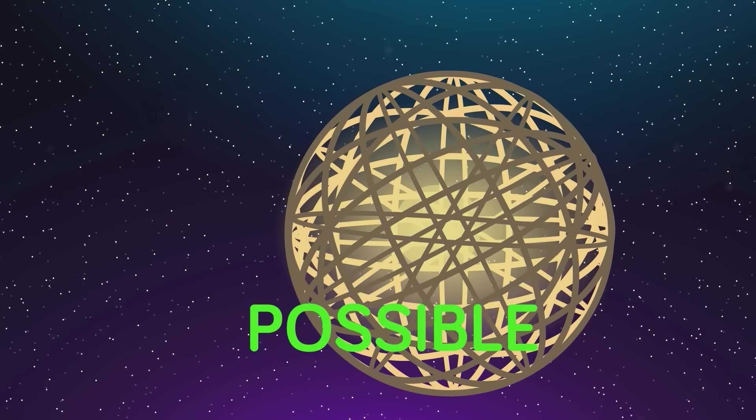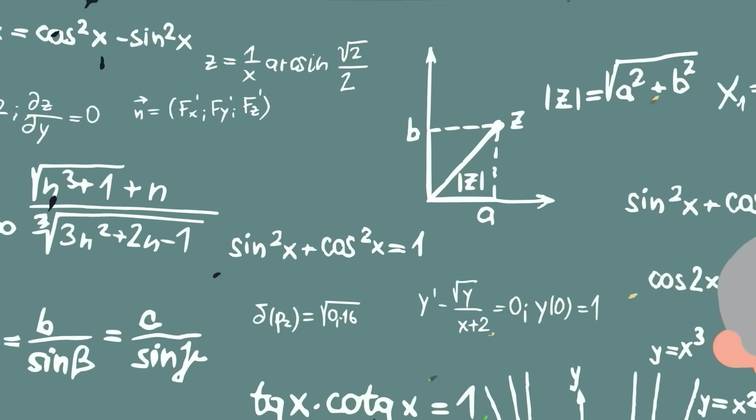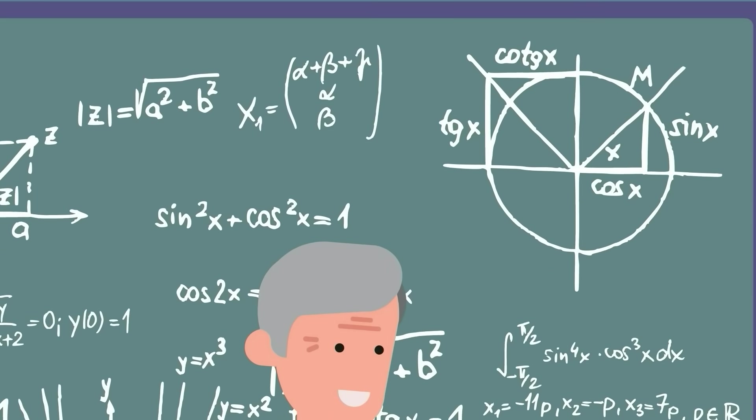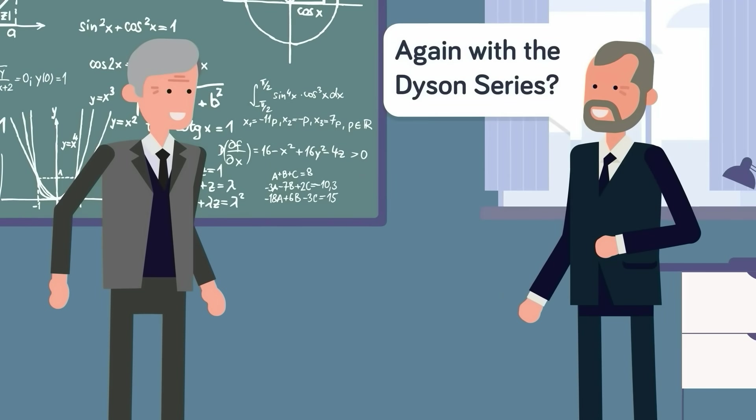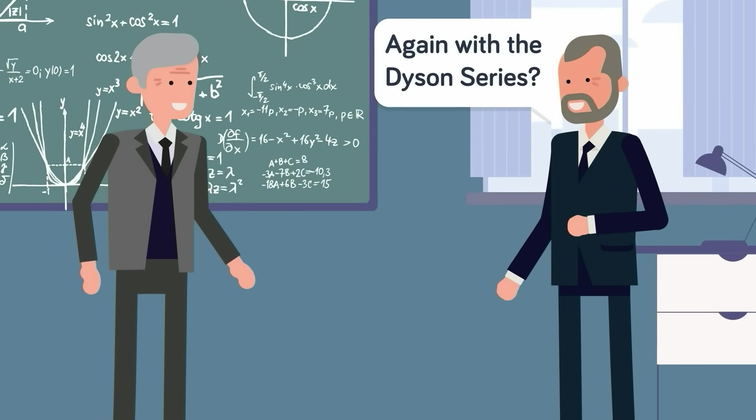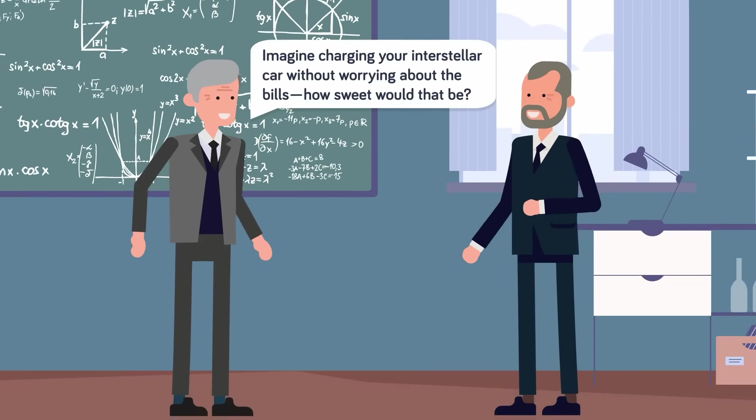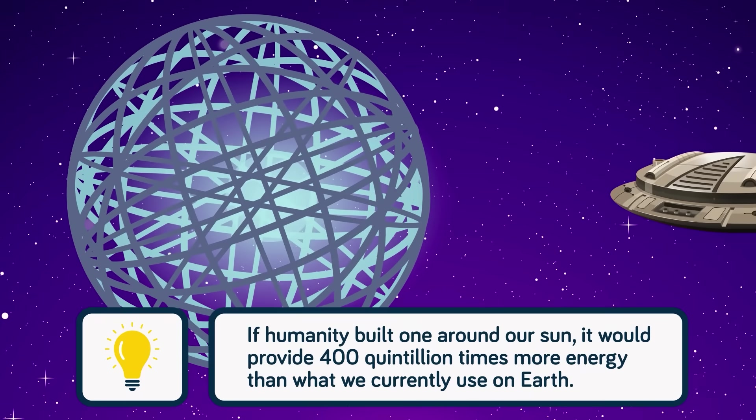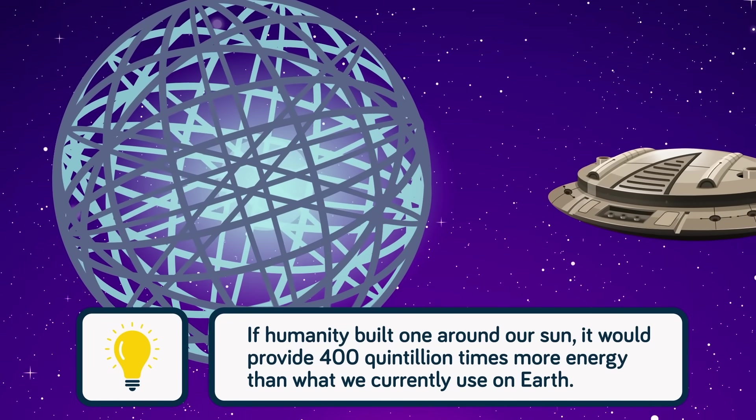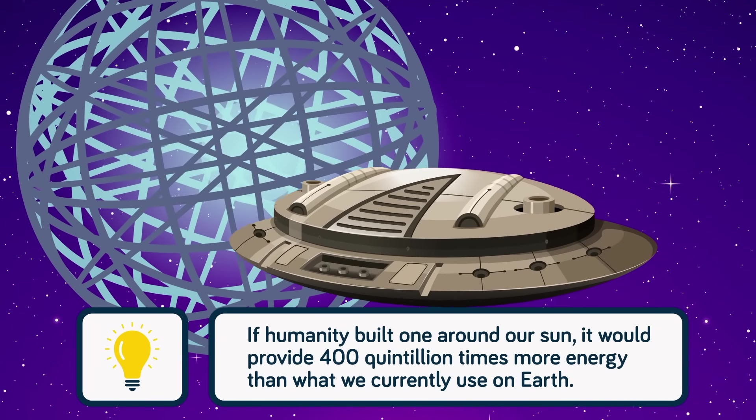Dyson believed that with the right technology, building such a structure could be possible. He developed this thought experiment beyond what anyone expected, and became known for his Dyson series, a collection of complex theoretical scientific concepts, with each one partnered with a Feynman drawing showing how the physics would work. But none of his theories captured the imagination of the public quite like the Dyson Sphere, a self-sustaining environment that would have an energy source that could last for millions of years.